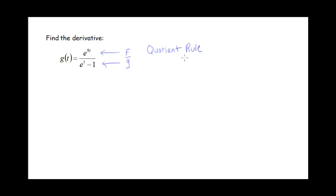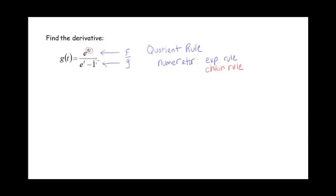When we're using the quotient rule, we have to figure out the derivative of the numerator and the derivative of the denominator. The numerator is an exponential function, so we're going to have to use the exponential rule. But also, since our exponent isn't just plain old t — since I have 5t here — I'm going to need to use the chain rule. So I'm going to need to multiply by the derivative of that exponent, and when I take the derivative of the exponent, I have to use the power rule.